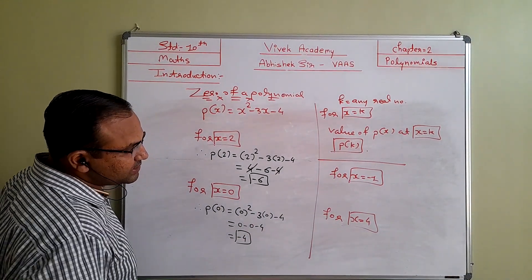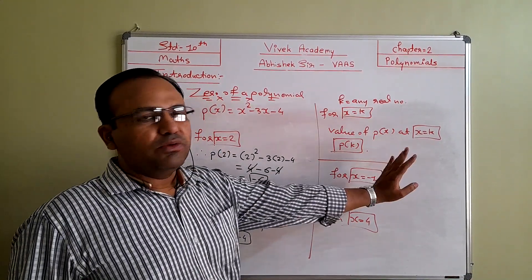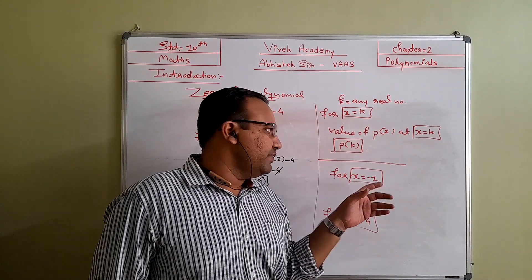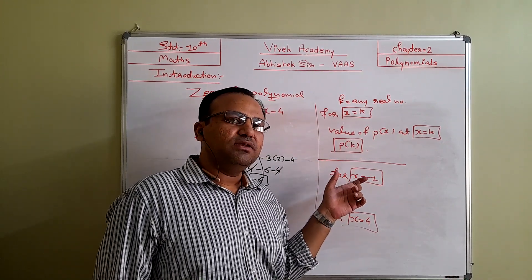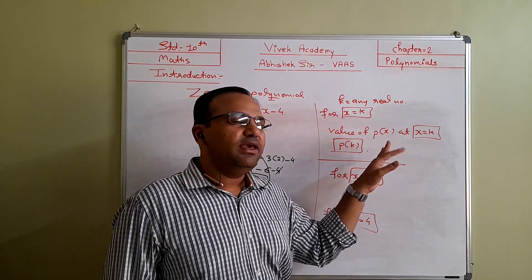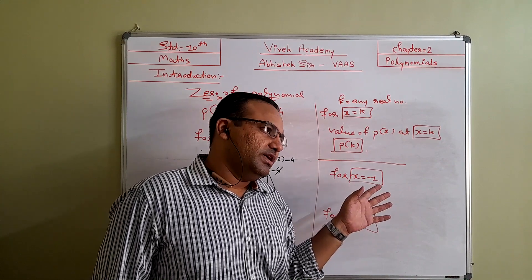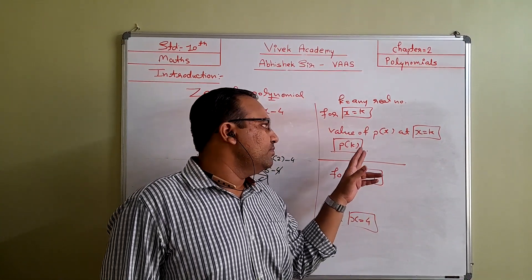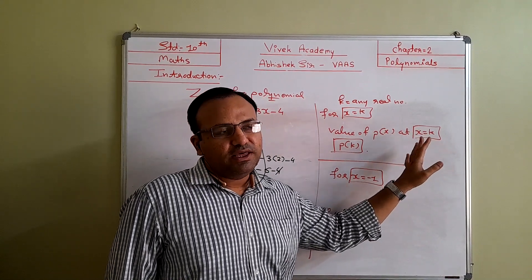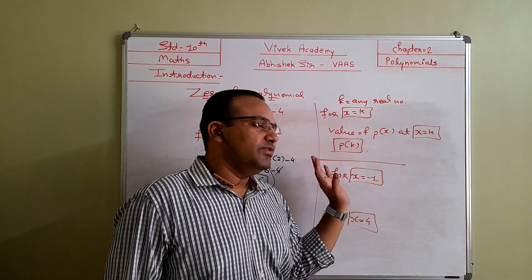Now, what is discussed in the theory: suppose k is any real number, for x equal to k, if you put k instead of x, we can say that the value of p of x at k will be p of k. If you put k instead of x, then the value of p of x will become p of k.